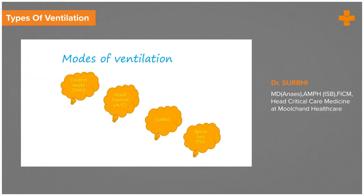Going into the modes of ventilator: the first is Controlled Mandatory Ventilation, which is a totally controlled mode where the patient has no role to play. After that we have Assist Control, where the patient can trigger or start a breath but the rest of the breath is totally controlled by the ventilator. Then SIMV, where the patient breaths are supported only to a certain limit, and Spontaneous, where the patient himself is taking the whole breath and the ventilator has less role to play. So this goes from a totally controlled to a patient-dependent mode.